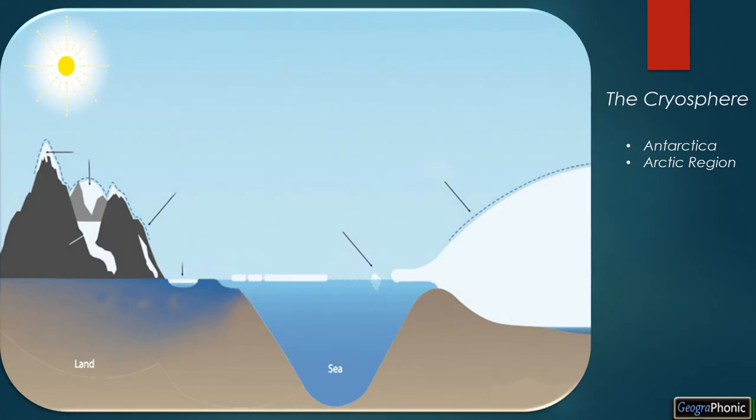This is a video about the elements we see in the Antarctic and Arctic regions, and we call that the cryosphere. So what elements do we see? We see, for example, permafrost, ice caps, and lake and river ice.